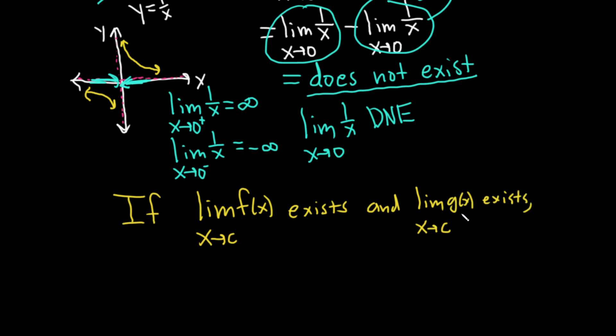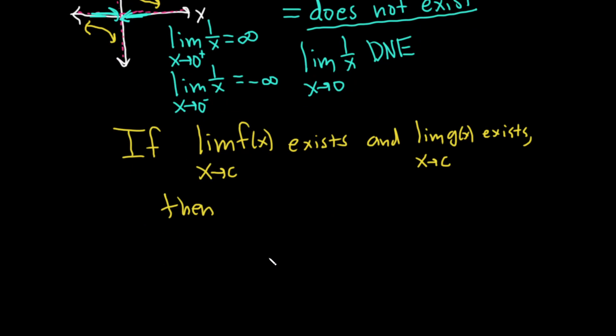Then what happens is you can look at the limit as x approaches c of the sum and difference, so f(x) plus or minus g(x) exists.